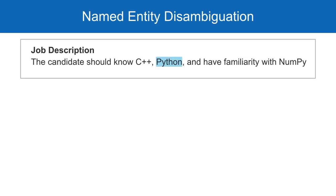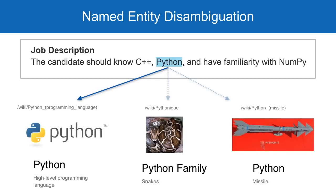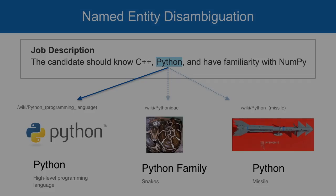Named entity disambiguation is the task of mapping ambiguous phrases in text — called surface forms — to canonical entities in a knowledge base like Wikipedia. Entity linking systems take into account the semantic context in which a phrase occurs to make a decision regarding each surface form.